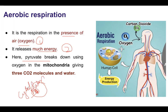In aerobic respiration, glucose is converted into pyruvate through glycolysis in the cytoplasm. Then the pyruvate moves into the mitochondria. So glycolysis happens in the cytoplasm, and then pyruvate is transferred to the mitochondria where the next steps occur in the presence of oxygen.